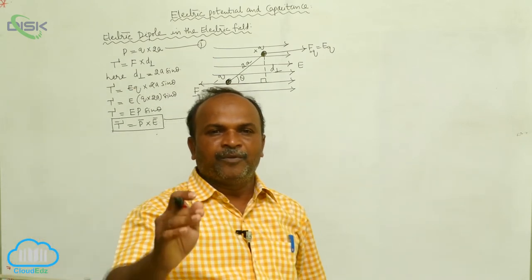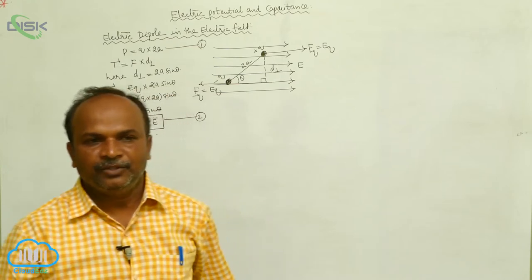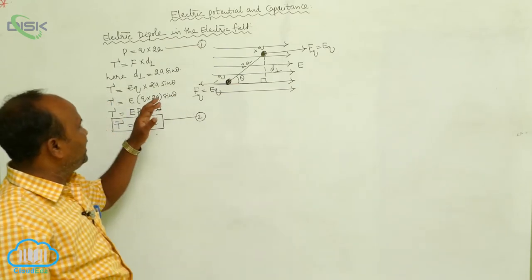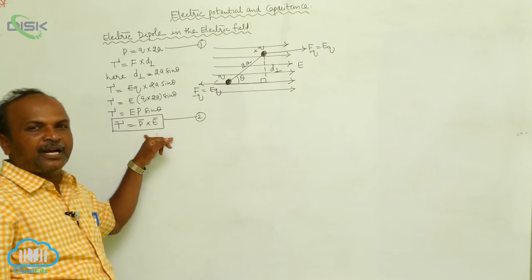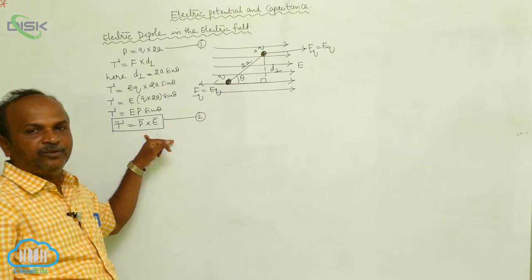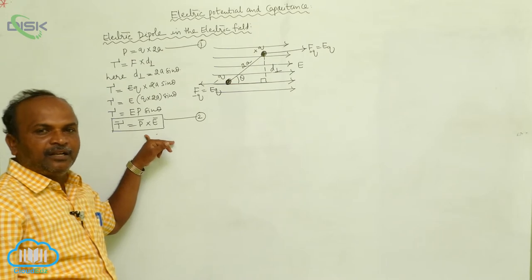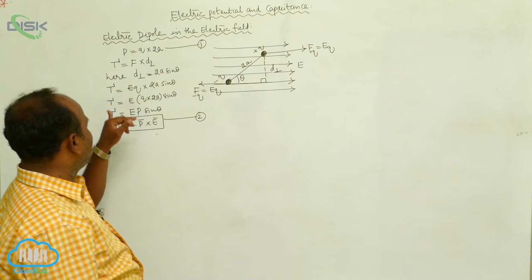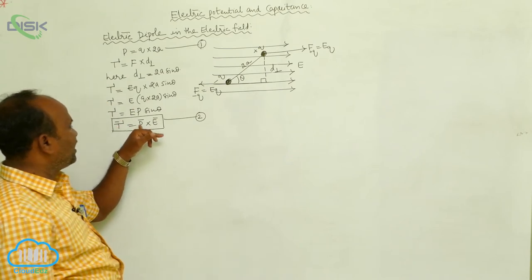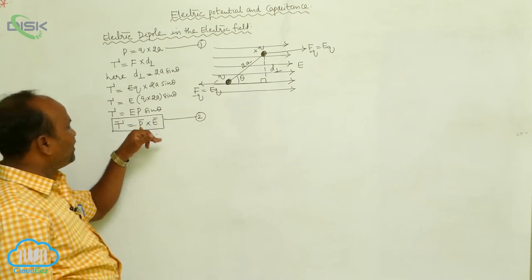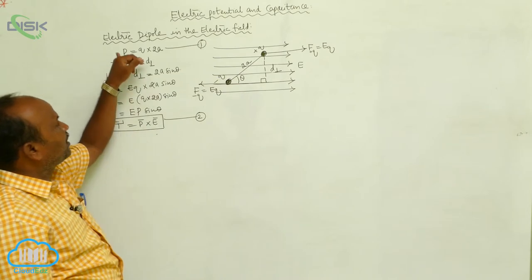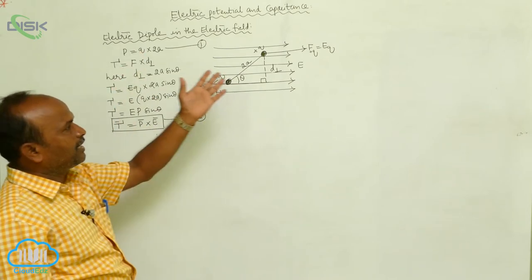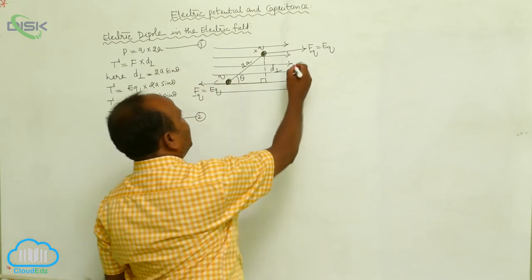Whenever the electric dipole is placed in the uniform electric field, it will experience a torque. Because of the torque, it will try to rotate. That rotating effect is explained through the torque: tau bar equals P bar cross E bar, where P bar is the dipole moment vector and E bar is the electric field intensity.